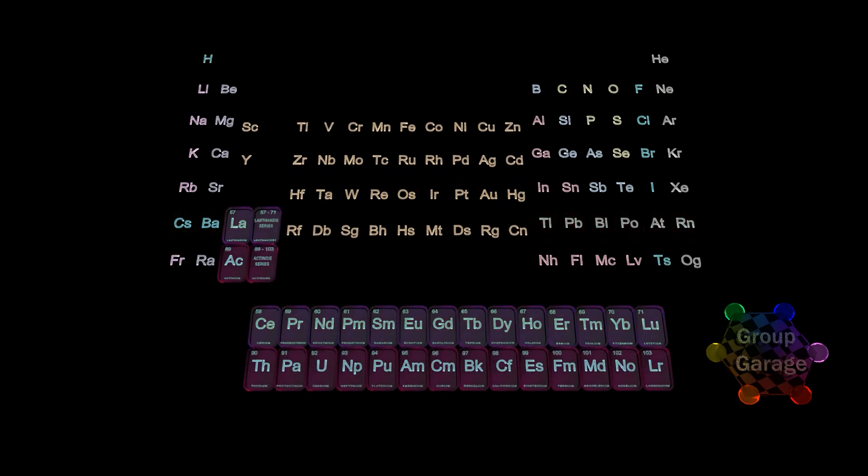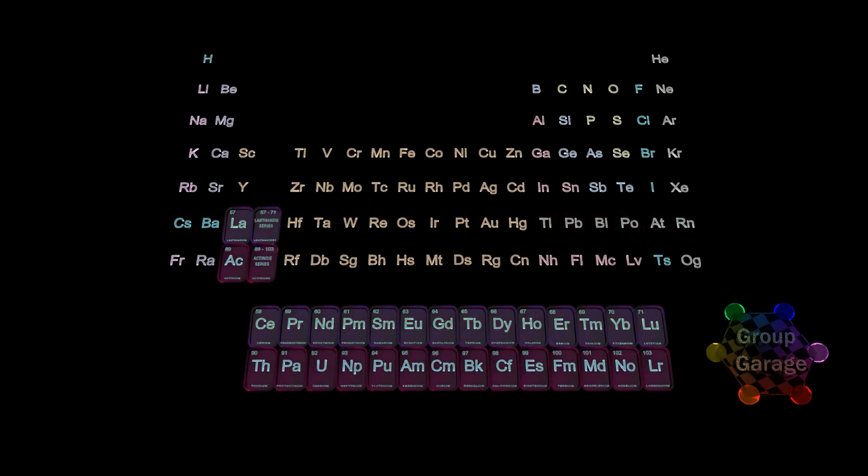Hopefully, now you have a basic idea of how the f orbitals are shaped, how they are filled, and where they are on the periodic table, the lanthanide and actinide series.